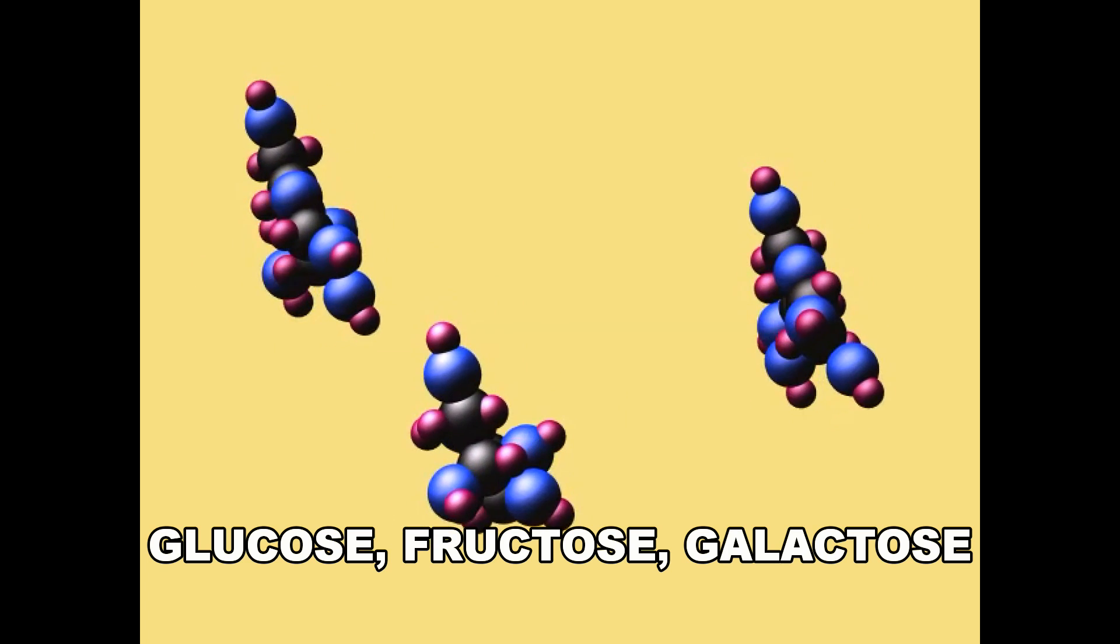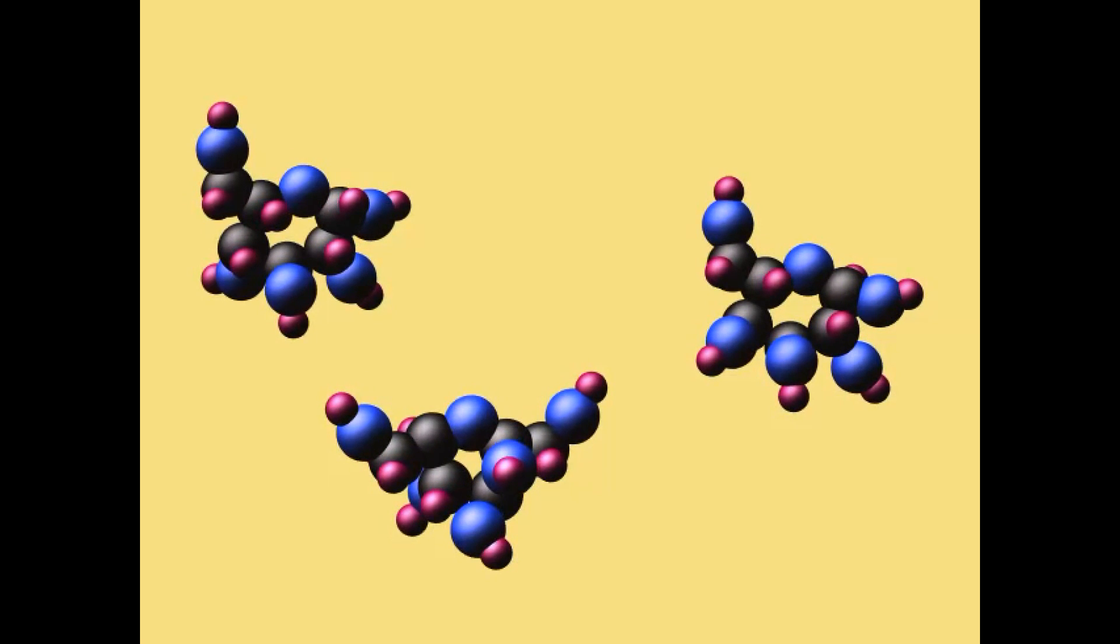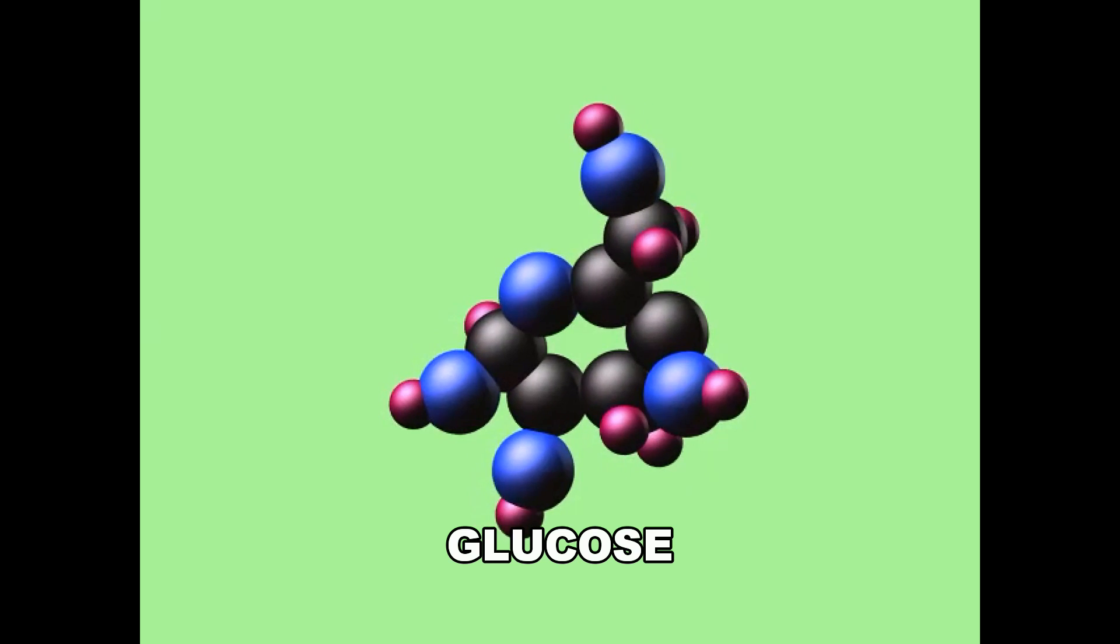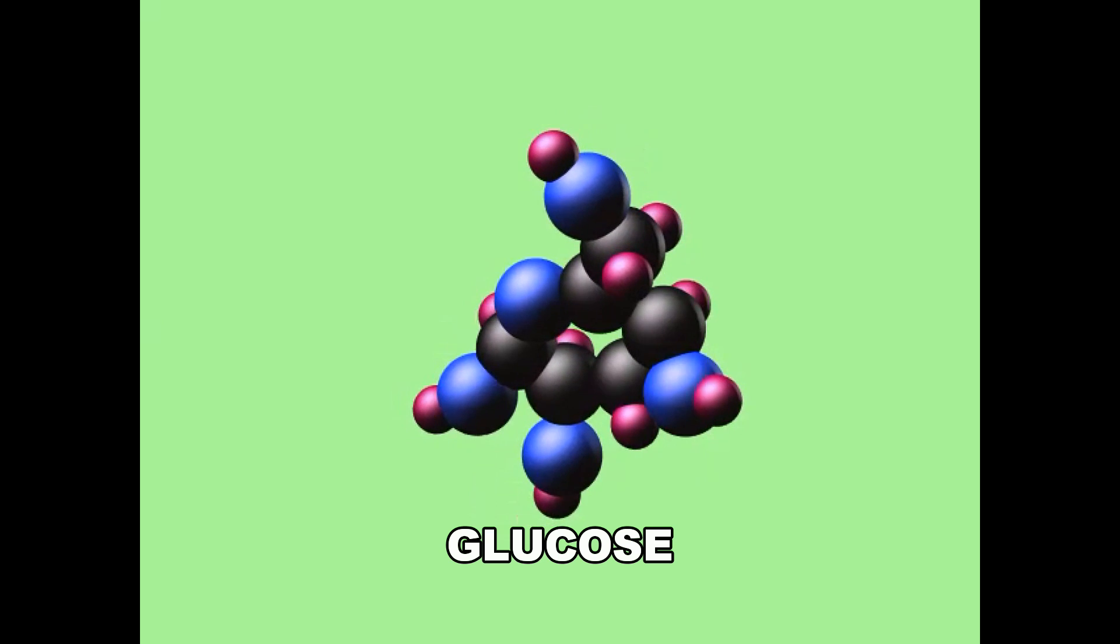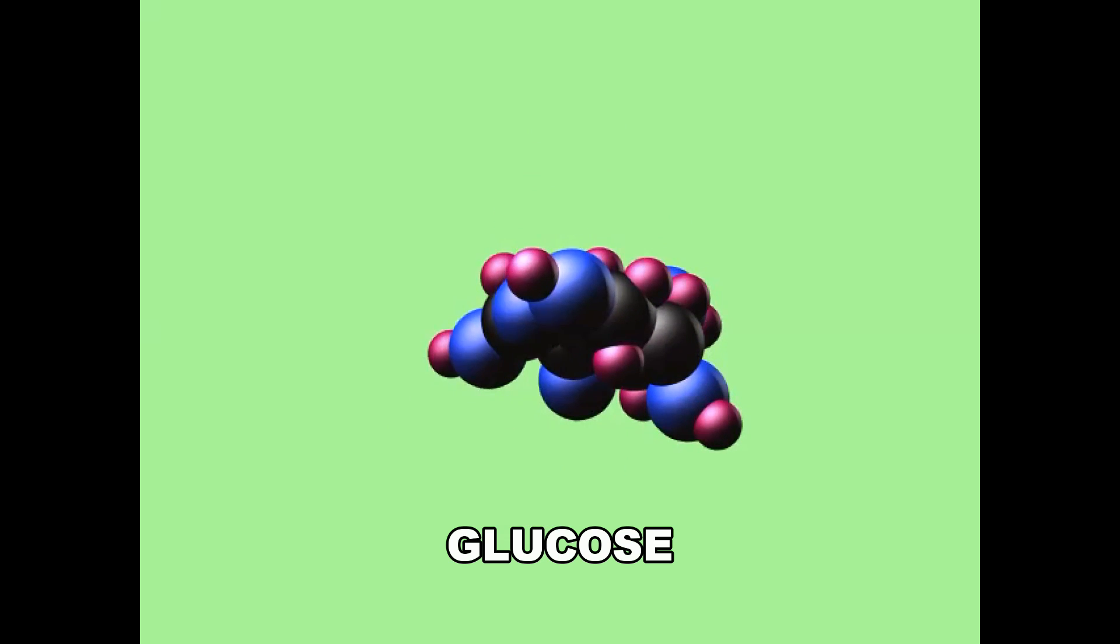These are all hexose sugars with six carbons each, glucose being the most common, since it can represent half of the average American's diet, since starch and glycogen are polymers of glucose.